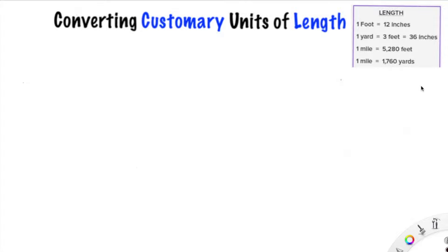Now with the customary system, it's a little trickier because you have to memorize the conversion rates. One foot is 12 inches, one yard is 3 feet or 36 inches, a mile is 5,280 feet, and a mile is 1,760 yards. These are things you are just going to have to memorize. Today we are going to be looking at how to change from one to the other.